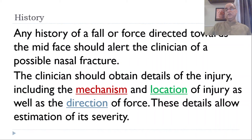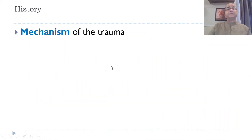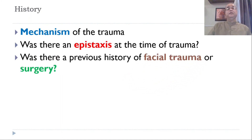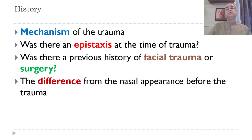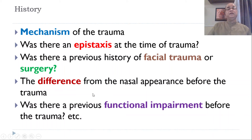Detailed history is essential. There will of course be a history of trauma, and we should determine the force, its direction, mechanism, and location of injury. The direction and severity of the force is very important. We should also ask whether there was nasal bleeding at the time, any previous facial trauma or surgery — to determine whether any deformity is due to the present trauma or was already there — and any functional impairment before the trauma.